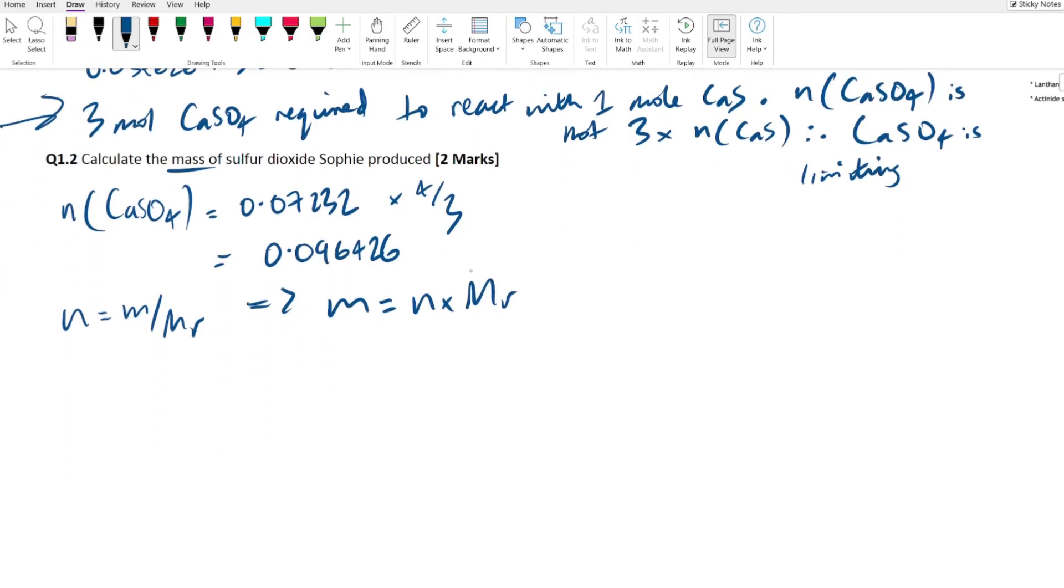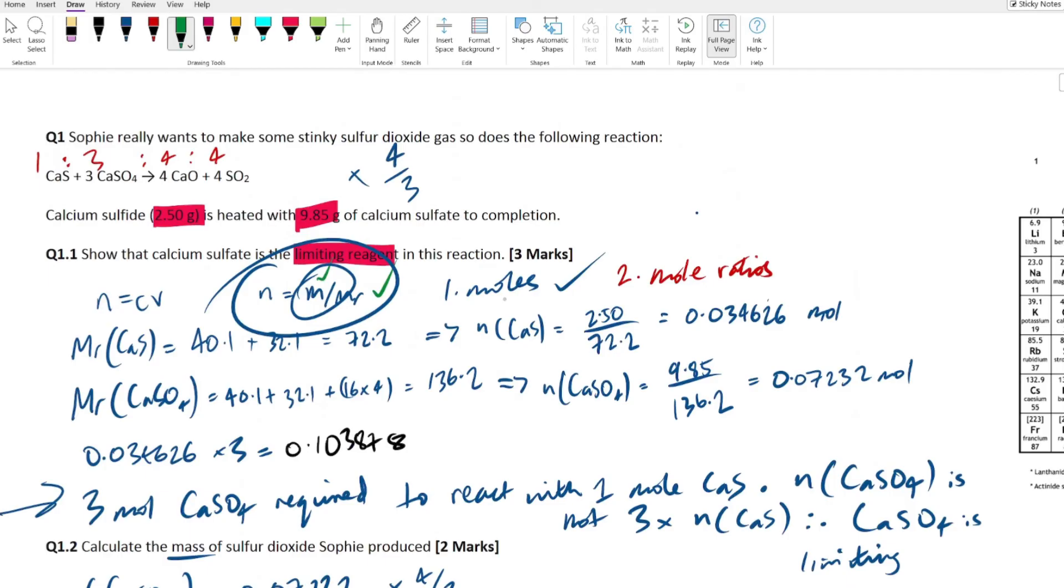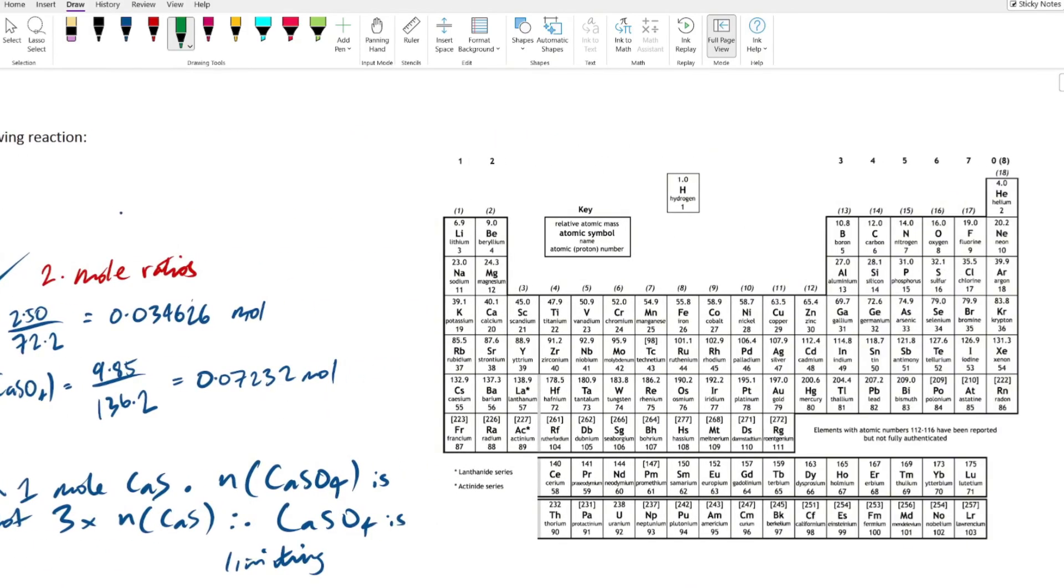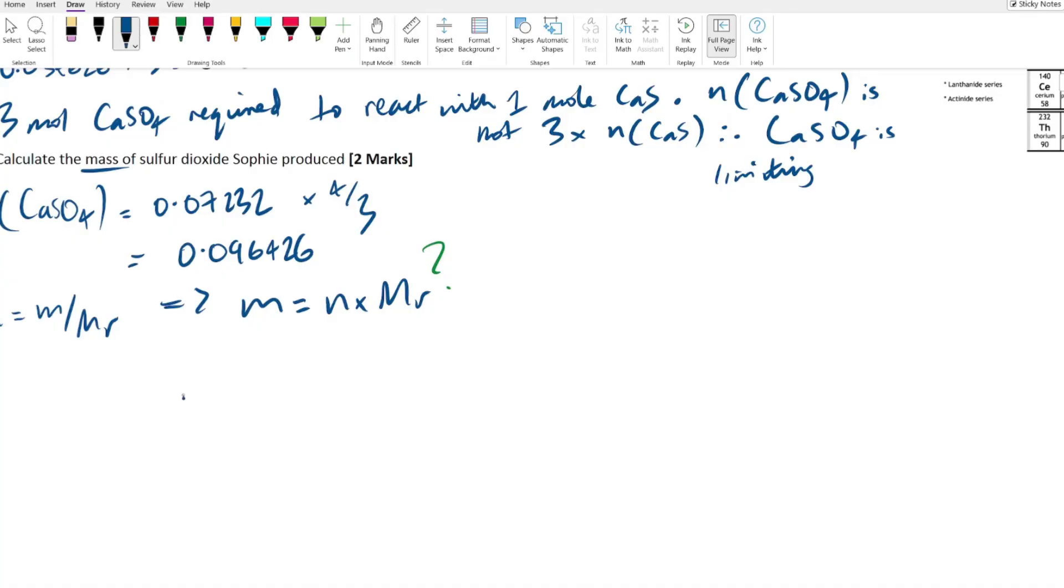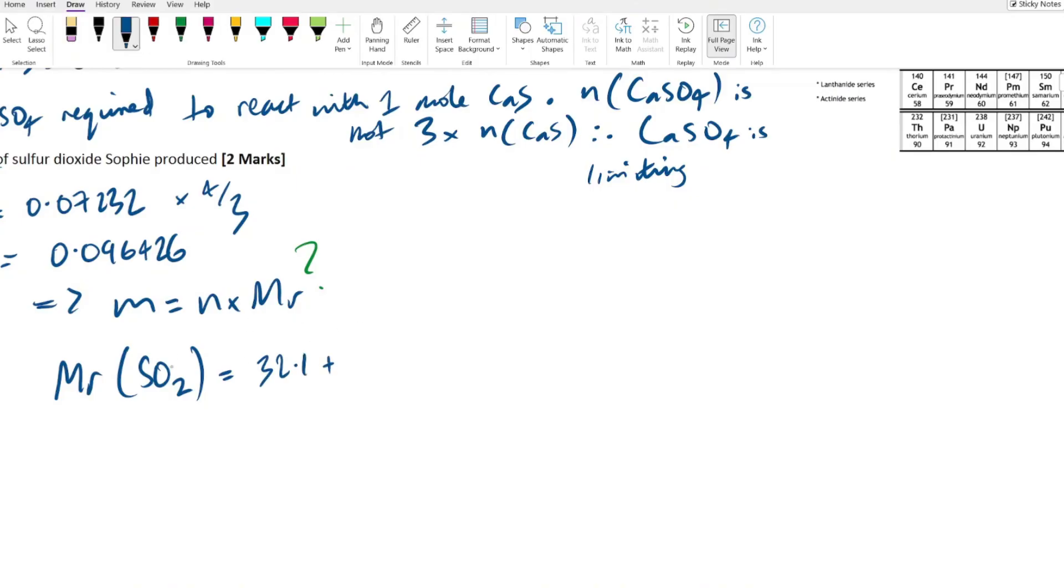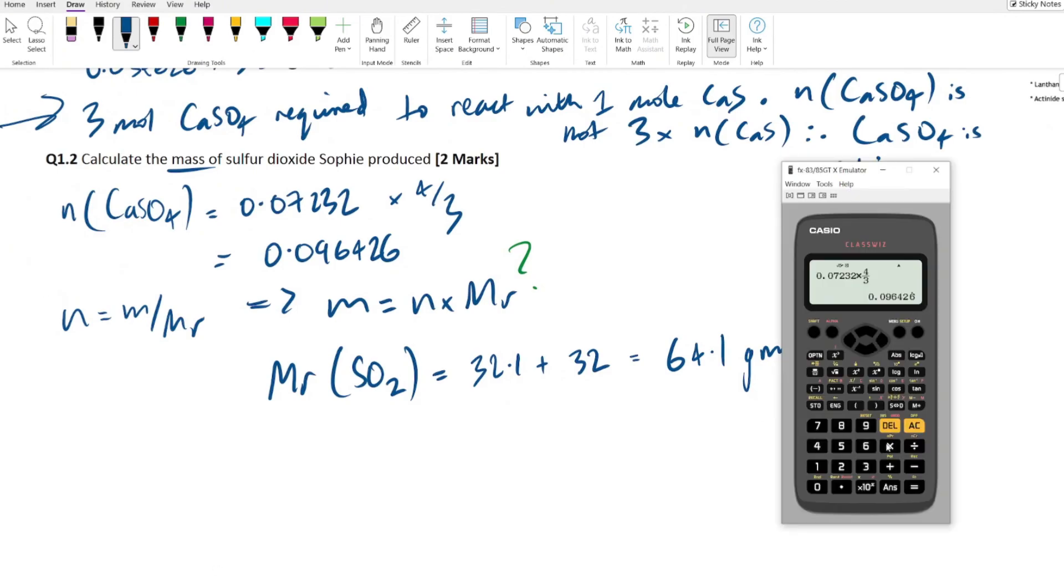So what we can do there is we can say, oh, we're actually missing this guy, aren't we? So we don't know what the mr is of the sulfur dioxide. So let's just use our periodic table, 32.1 plus 2 times 16. So the mr of sulfur dioxide, we have the sulfur at 32.1 plus 2 lots of the oxygen is 16. 16 times 2 is 32, don't need the calculator there. So 32.1 plus 32 is going to be 64.1, and this is grams per mole. That is the unit of our MR. Now what we can do is we can just chuck these two guys together in an equation in our calculator and work out what the mass is.